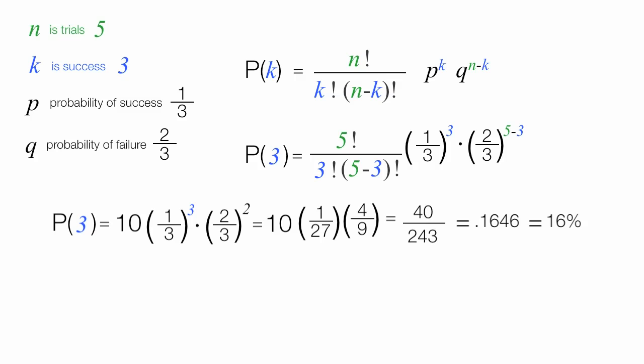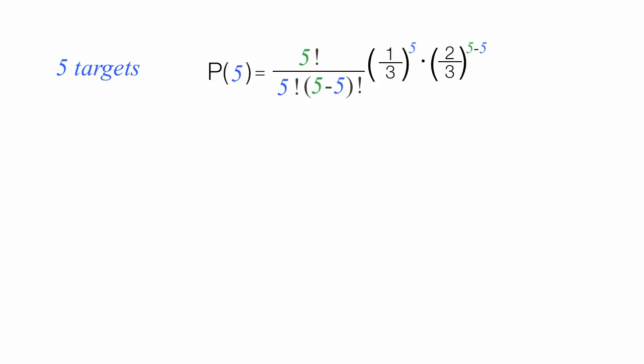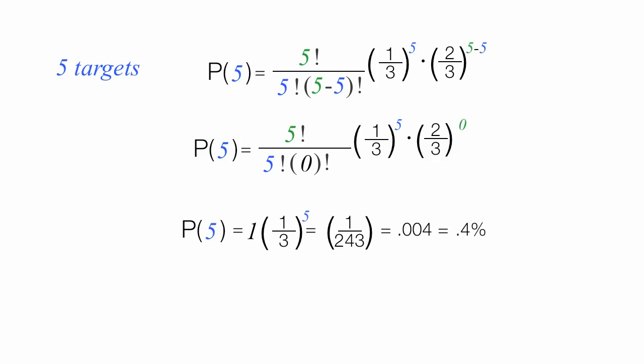What's the probability of hitting all five targets? Let's calculate that. I have five targets and I want to hit all five. There's only one way to do this — one combination. Here's the equation. The likelihood of hitting all five targets is about 0.4%. Not very likely.